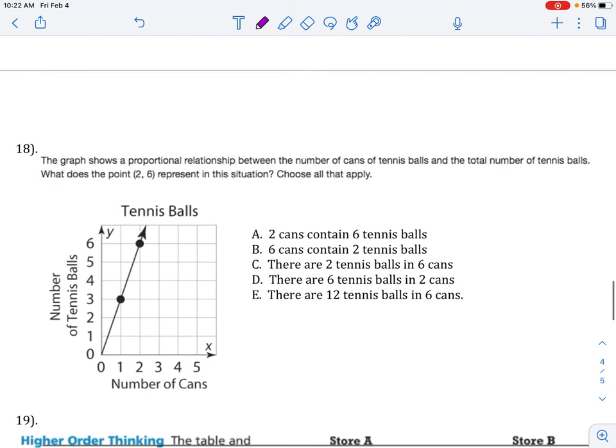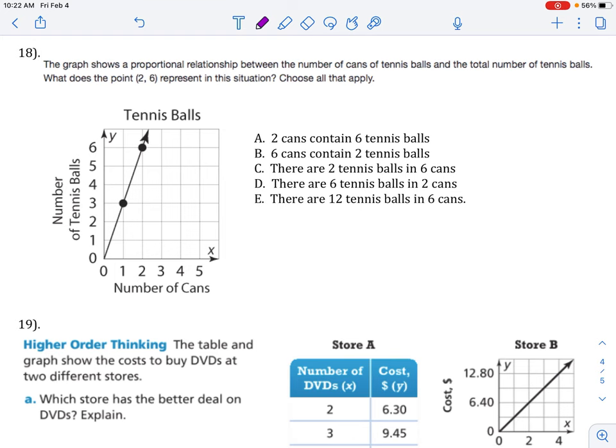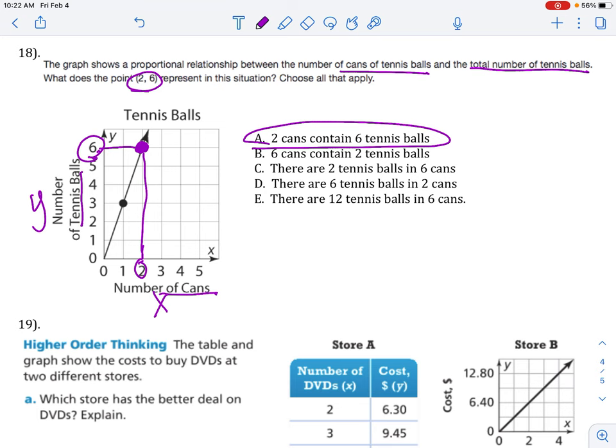Flip over to the next page. The graph shows a proportional relationship between the number of cans of tennis balls and the total number of tennis balls. That's our y and our x on this graph. What does the point 2, 6 represent in this situation? So, let's find where that point is. 2, 6 is this point at the top. And that means it represents 6 tennis balls and 2 cans. So, 2 cans with 6 tennis balls. B is backwards. C is not correct. D, 6 tennis balls and 2 cans. It's just the reverse way of saying what you found in A.